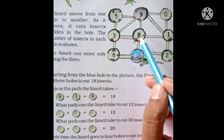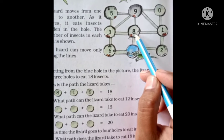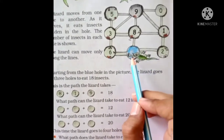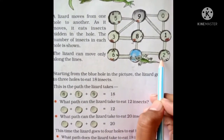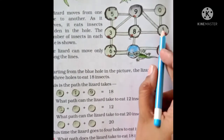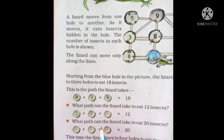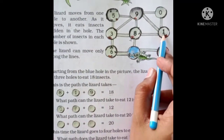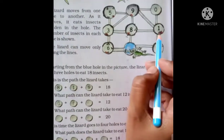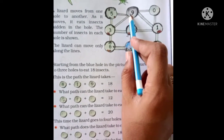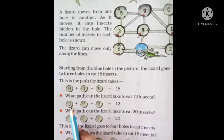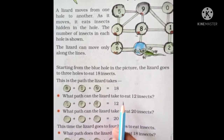Dekho hum yahaan pe jaenge — 8 ke paas jaenge. Agar wo blue hall se jaegi, to pehle wo 2 ke paas jaegi. 2 insects kha liye, to yahan likhte hain 2. Phir 1 pe jaegi, to 3 ho gaye — I write here 1. 2 plus 1 equals 3. Ab 12 mein se 3 jaega to 9 bachega. To wo 9 ke paas jaegi. So 2 plus 1 is 3, and 3 plus 9 is 12. These three holes: 2, 1, and 9.